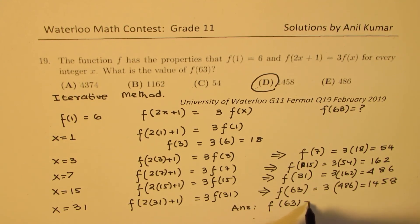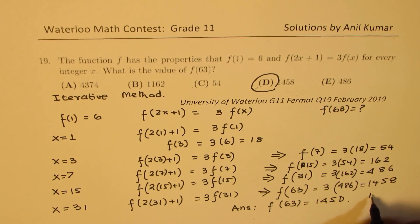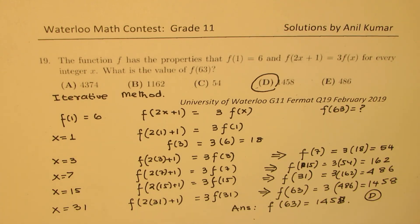So we have our answer: f(63) = 1458, which is option D. That is how you could solve this question systematically. I hope that makes sense. Feel free to write a comment, share your views. Also look into more questions from this test paper in the following videos. Thanks for your time and all the best!